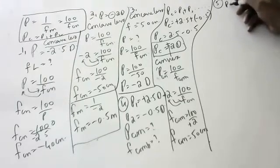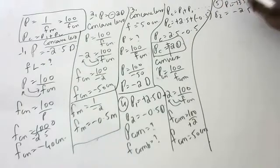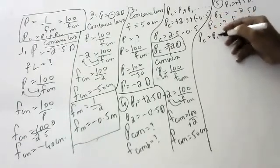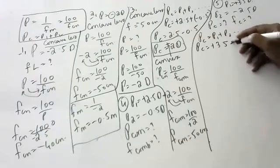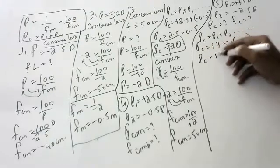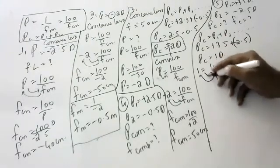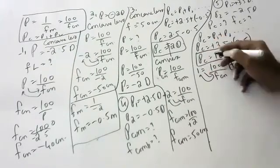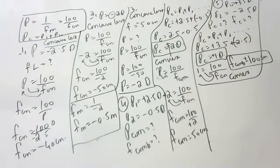Next: two lenses, one of power plus 3.5 diopters and another of minus 2.5 diopters. Power of combination = 3.5 + (minus 2.5) = 1 diopter. Focal length of combination = 100/1 = 100 centimeters.